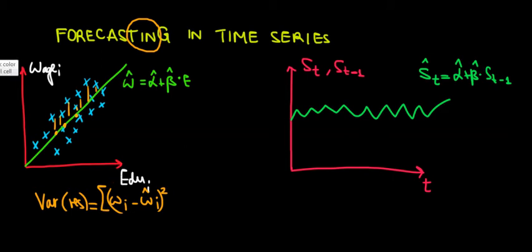Now the difference between cross-sectional and time series when it comes to predictions is this: in time series we're using data from the past to predict the future.